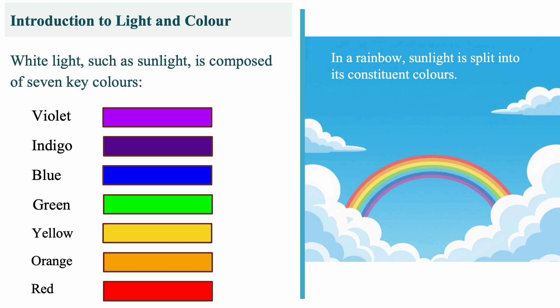Let's start with light itself. White light is not just one color. It's actually made of seven colors: violet, indigo, blue, green, yellow, orange and red.